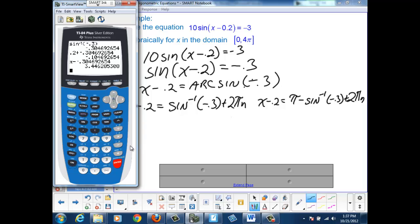Now to that 3.446, I need to add the 0.2. So I'll take that and add 0.2. So my initial values for x are -0.105 and 3.646.